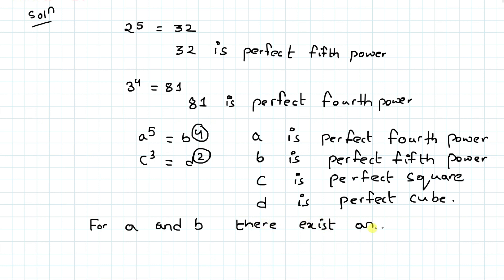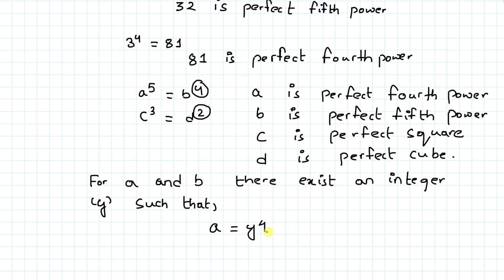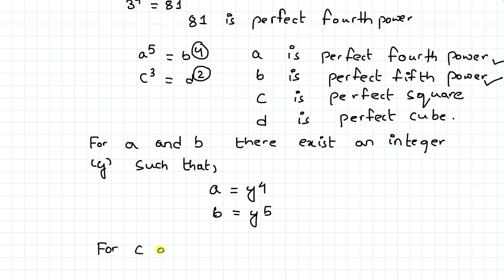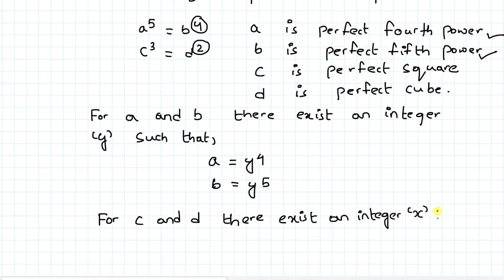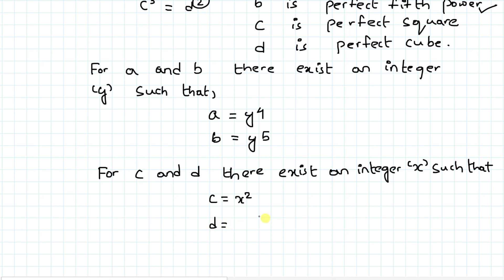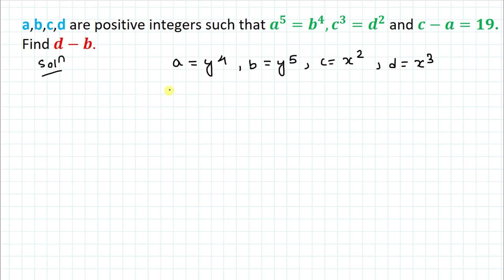In the next step, for a and b there exists an integer y such that a equals y to the power 4 and b equals y to the power 5. Similarly, for c and d there exists an integer x such that c equals x squared and d equals x cubed.